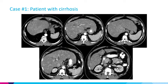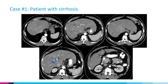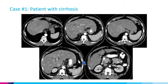This is a case we had a few years back with HCV cirrhosis and a CT from the outside. You can see these are arterial phase images — a really very complex appearance of the liver with multiple ill-defined areas of enhancement, maybe a lesion here. This was really hard to interpret based on the CT.